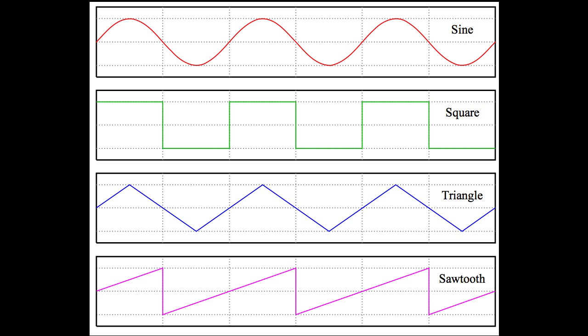A waveform which is just a flat line would be completely silent, because vibrations are created by the compression and rarefaction phases fluctuating. So no fluctuation means no sound. The length of the wave's cycle, which is one compression and one rarefaction, determines its pitch. This is because a shorter wave can complete more cycles per second, which makes a higher frequency, and a longer wave can complete less cycles per second, which makes a lower frequency.